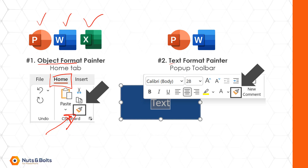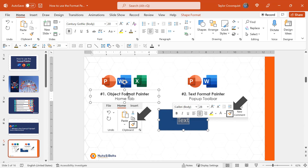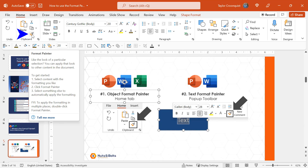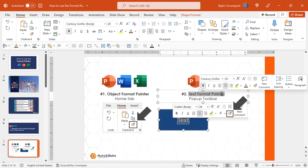In PowerPoint and Word, you also have what I call the Text Format Painter. Once you select text, you'll see in this pop-up toolbar you also get the Format Painter icon. If I come into PowerPoint, I'll show you exactly where they are. If I select an object and come to the Home tab, you can see the paintbrush icon right here — this is the object level Format Painter. Also here in PowerPoint or Word, if I select text in this pop-up menu, you get a whole bunch of options, including the paintbrush, which again is the Format Painter.